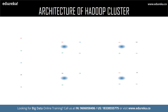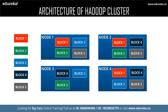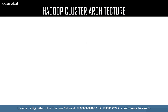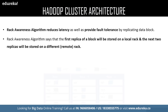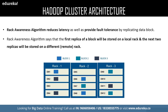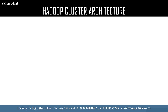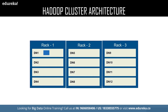The rack awareness algorithm is all about data storage. It states that the first replica of the actual data must be located in the local rack, and the rest of the replicas can be stored on a different remote rack. For example, with a data block on data node one — which is on rack one (the local rack) — the replica of the data block can be stored in a remote rack such as rack two or rack three. As you can see, the replicas have been stored in the remote rack, which is rack number two.